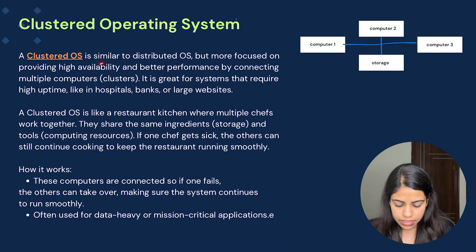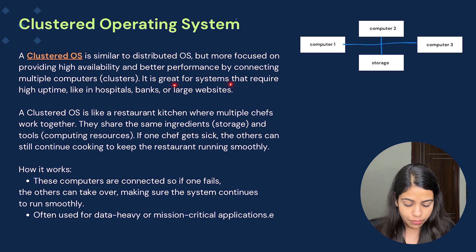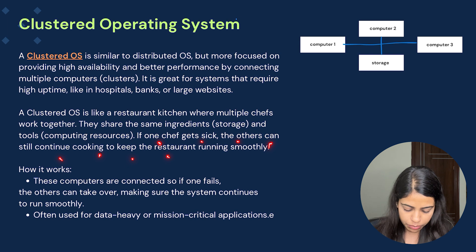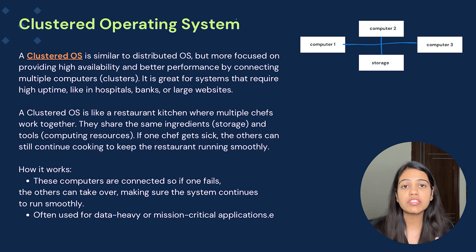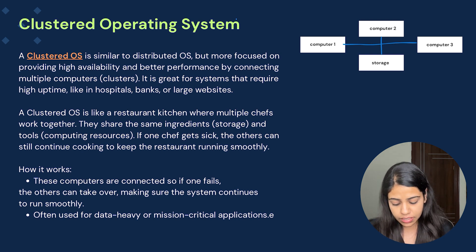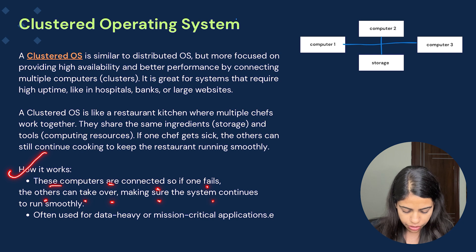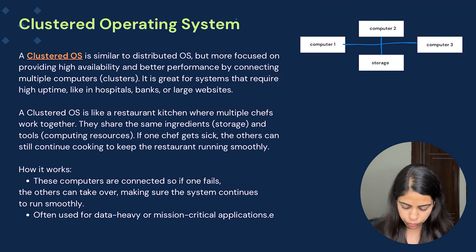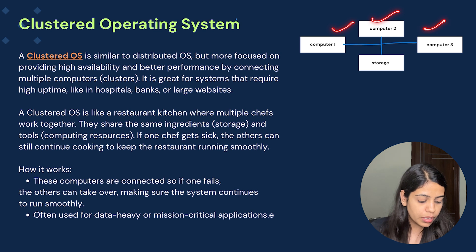Now, a clustered OS is similar to a distributed OS but more focused on providing high availability and better performance by connecting multiple computers in a cluster. It is great for systems that require high uptime like hospitals, banks, or large websites. A clustered OS is like a restaurant kitchen where multiple chefs work together — they share the same ingredients, storage, and tools. If one chef gets sick, others can still continue cooking. Unlike distributed OS where resources are not shared, here the storage and computing resources are shared. If one computer fails, the other takes over immediately to keep everything running smoothly.